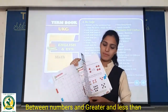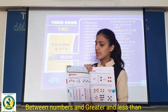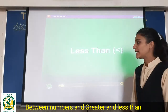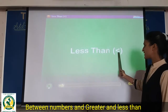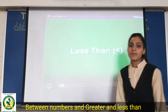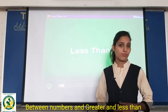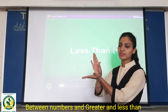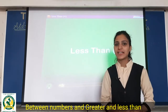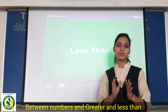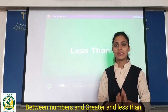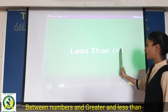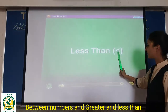Abhi, page turn karenge. Page number 146. Ismein ab hum karenge less than. Ok? Humne seekha greater than. Abhi, less than. Jab humne kaha ki jo fish hai, hungry fish, jisko bahut bhook lagi hai — uska mouth kis side open hota hai? Jahan usse jyada food milega. Us side uska fish ka mouth open hota hai. Lekin, jis side jyada food nahin hai, vohan par closed end hota hai, right? Dekho, yeh less than ka sign hai. Greater than ka aise tha. Aur, yeh less than ka — dekho, close hai. Yahan se, right?